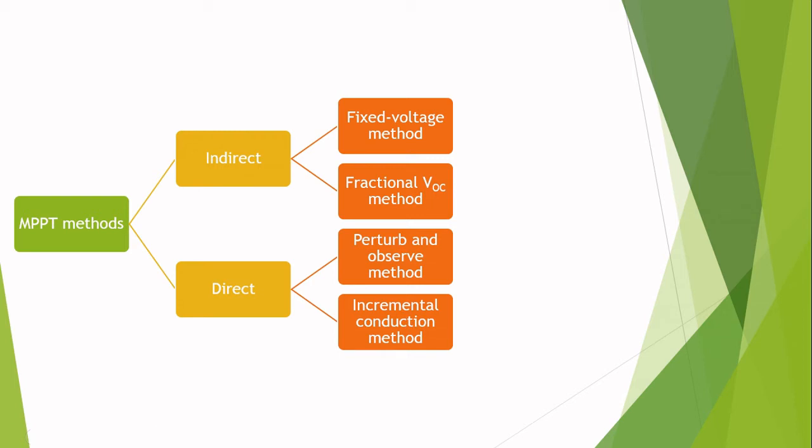The current sweep method uses a sweep waveform for the photovoltaic array current such that the IV characteristics of the photovoltaic array are obtained and updated at fixed intervals. The maximum power point voltage can be computed from the characteristic curve at all times. Now I will discuss the remaining methods.